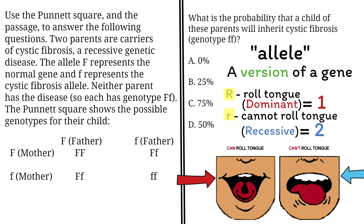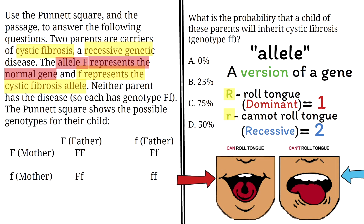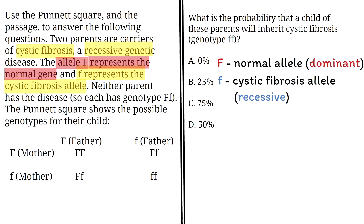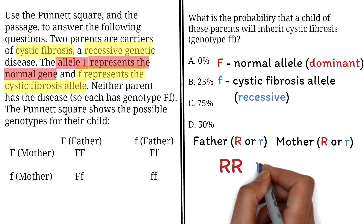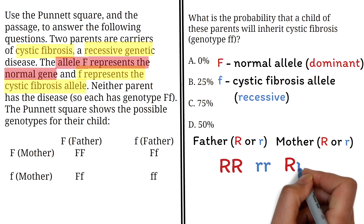From the question, notice that the cystic fibrosis disease comes from a recessive allele, represented by a lowercase f. Since cystic fibrosis comes from the recessive allele, lowercase f, the child will need to inherit two of them to get the disease. However, capital F is the dominant allele and represents a normal gene. Note that everyone inherits two alleles — one from their father and one from their mother — so you can inherit two dominant alleles, two recessive alleles, or one dominant and one recessive allele.